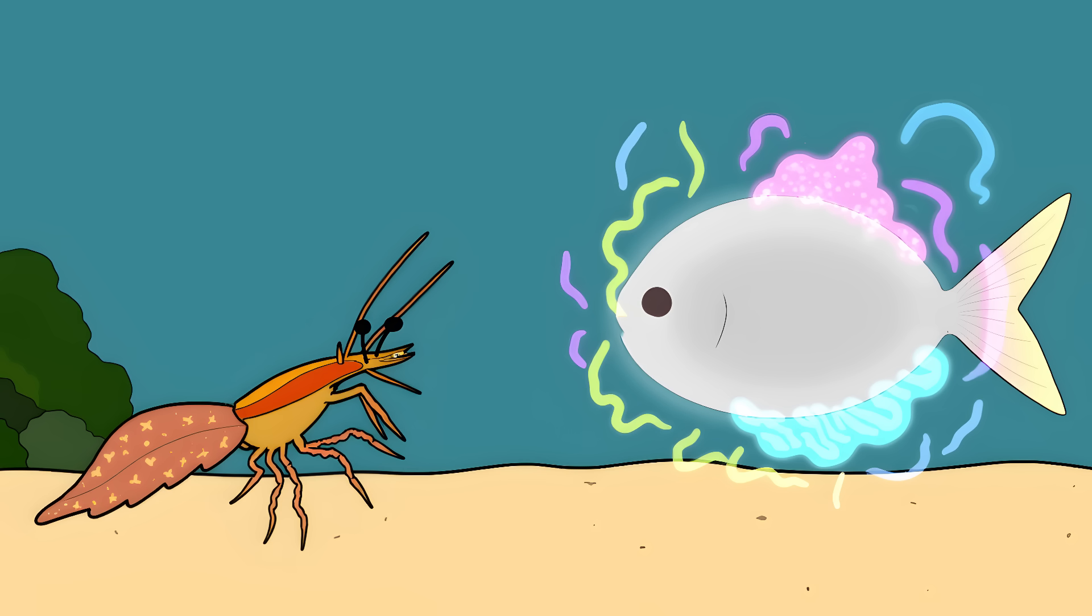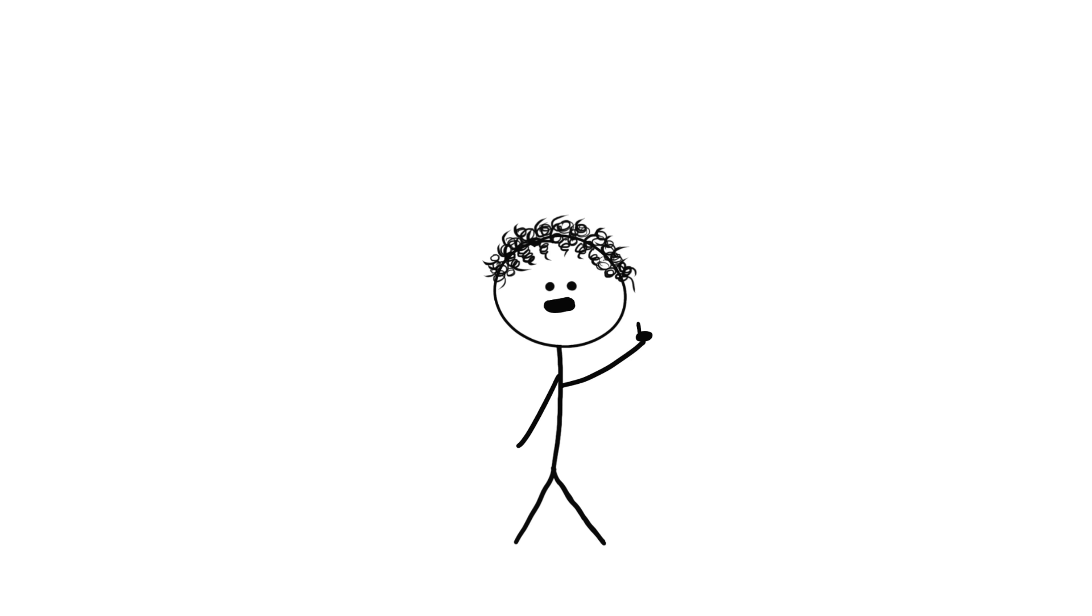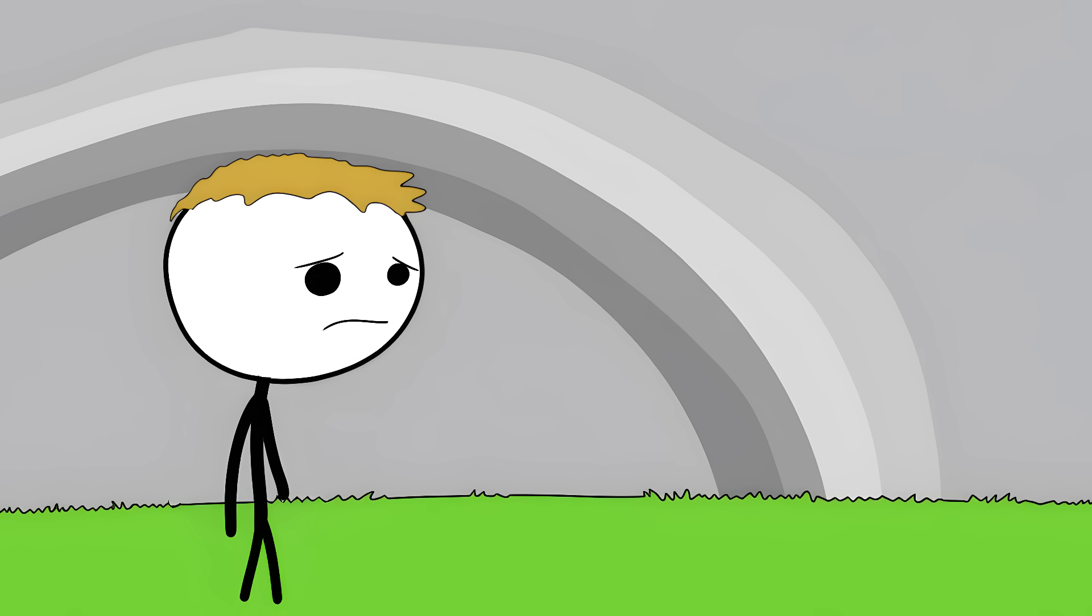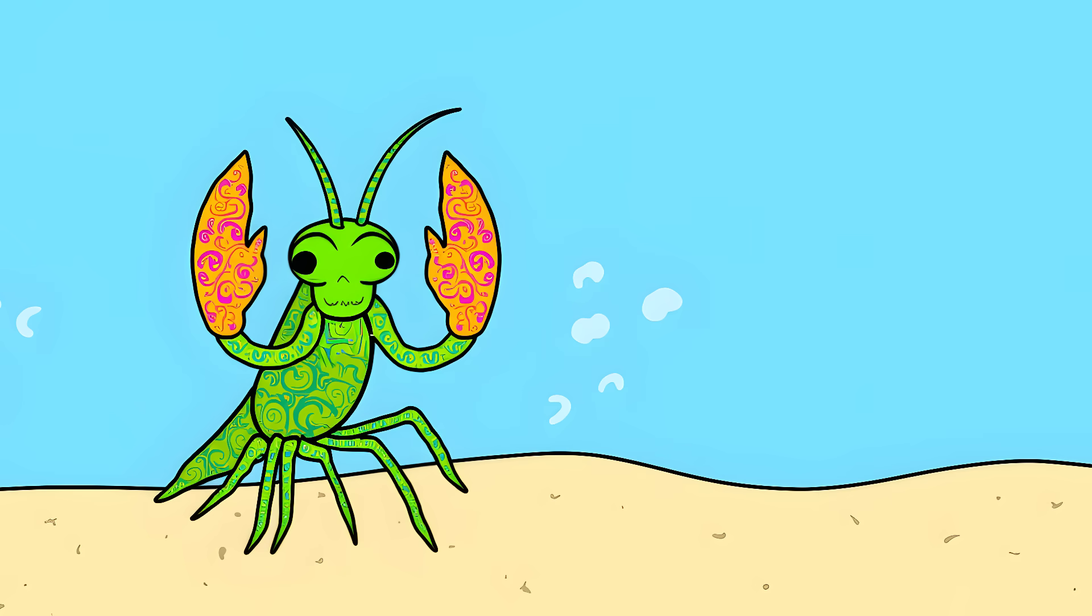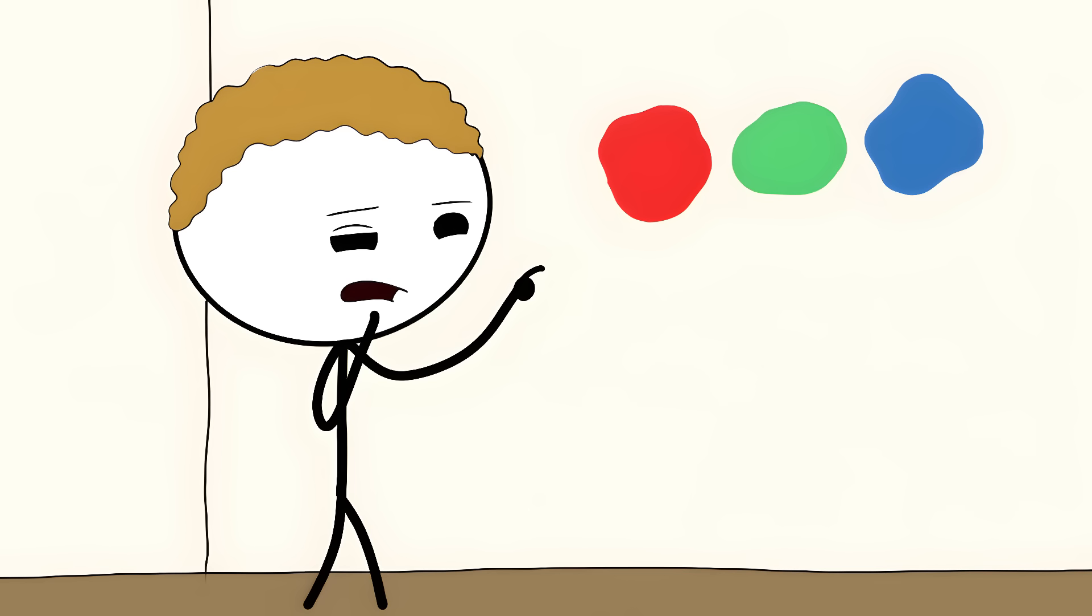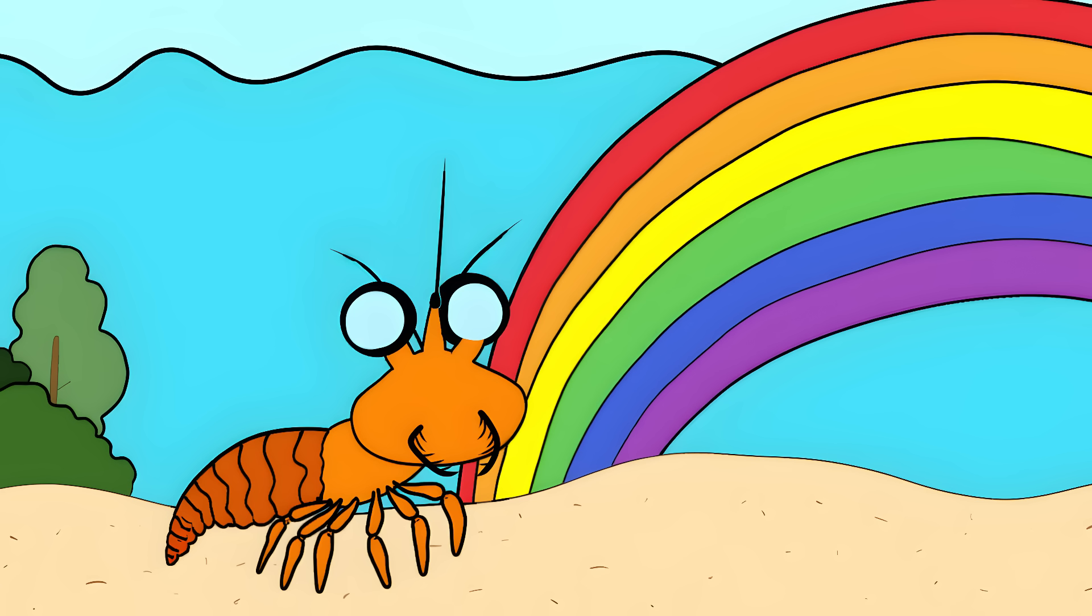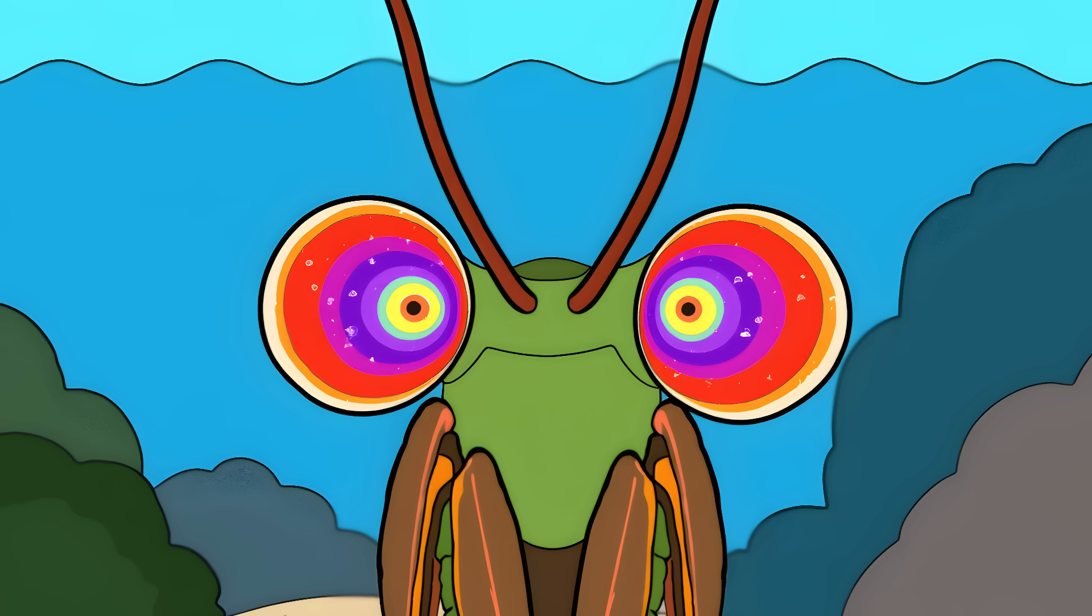Number 3: The Mantis Shrimp's Supervision. Everything you see right now is just a tiny fraction of what's actually there. You're basically colorblind compared to a mantis shrimp. Meet the mantis shrimp, the psychedelic warrior of the ocean. While we humans see in just three colors—red, green, and blue—this tiny warrior sees in 12 different colors. That's like upgrading from a box of 8 crayons to having the entire paint department at Home Depot in your eyeballs.